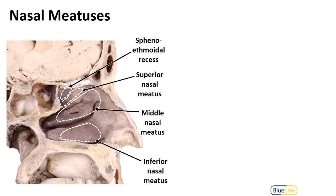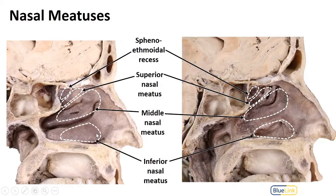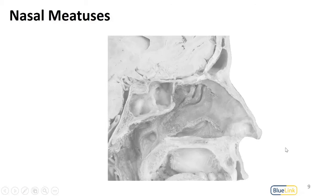Now let's talk about where the sinuses drain into the nasal cavity — into spaces called the nasal meatuses, found lateral to the concha. The different spaces are: the sphenoethmoidal recess, found most superiorly; the superior nasal meatus, lateral to the superior nasal concha; the middle nasal meatus, lateral to the middle nasal concha; and the inferior nasal meatus, lateral to the inferior nasal concha. With the concha removed, you have a clearer view of each of these spaces.